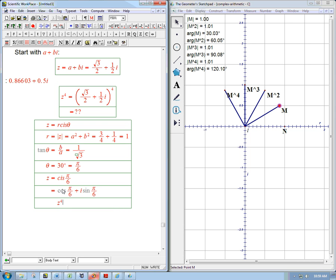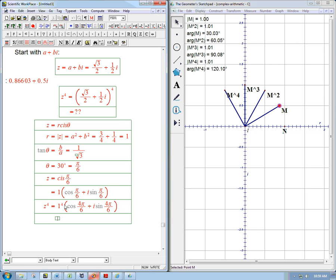Now z fourth is really easy. It's 1 to the fourth. Let me just put that 1 in actually explicitly. It's kind of silly, but it's 1 to the fourth, which is still 1, times cosine of 4 pi over 6 plus i sine 4 pi over 6.